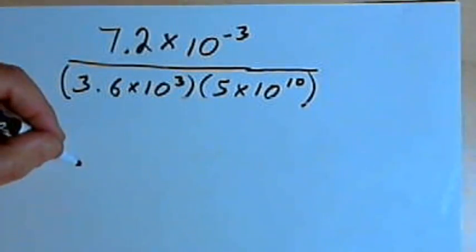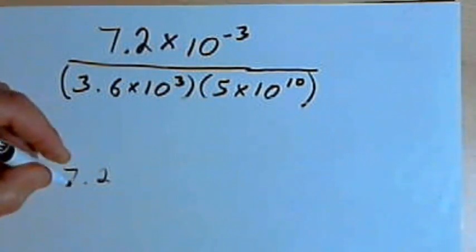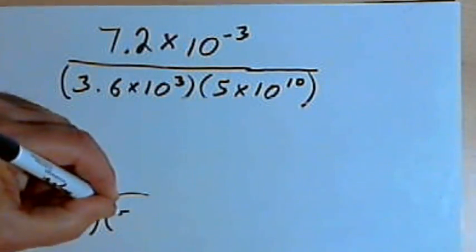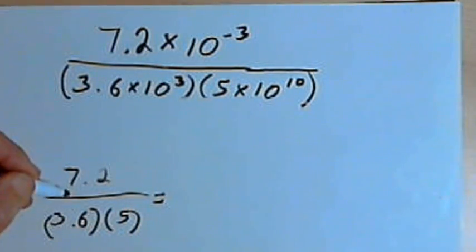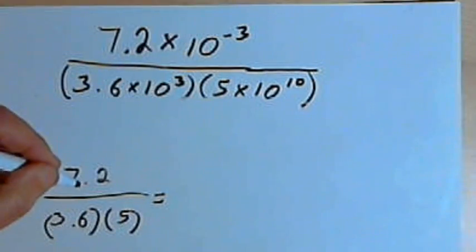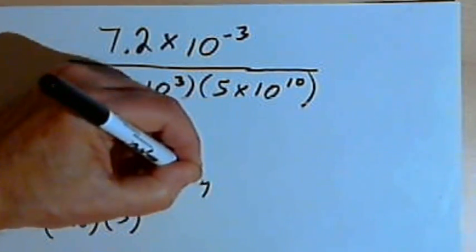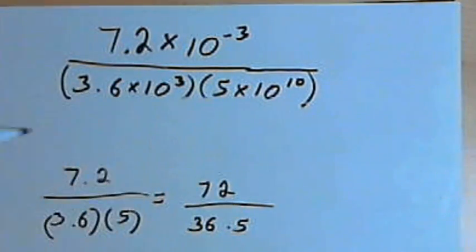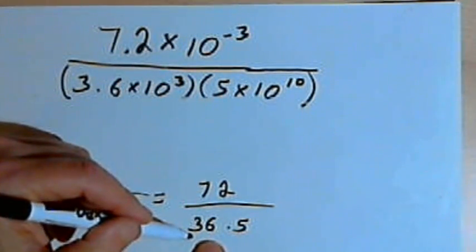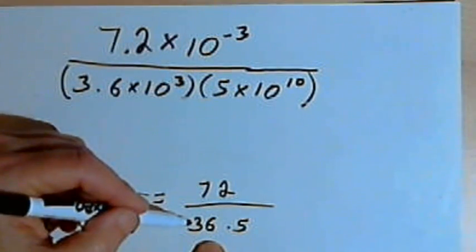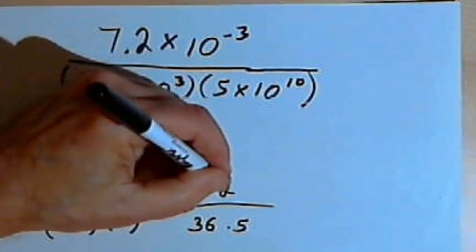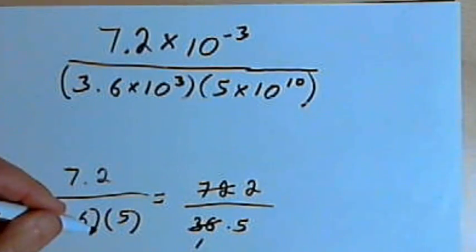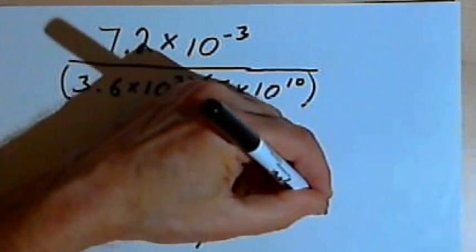So I'm going to take the 7.2 and divide that by 3.6 times 5. And the first thing I'll do is get rid of my decimals so I can calculate this easier. I'll multiply the 7.2 and the 3.6 by 10. That means I've got 72 over 36 times 5. Now, 72 is 2 times 36, so why don't I divide both the numerator and the denominator by 36. That means my numerator is just going to become 2. My denominator will just be 5. So that fraction that I have there is just 2 fifths. And 2 fifths equals 0.4.